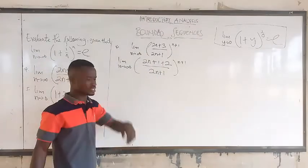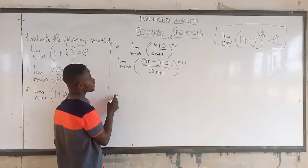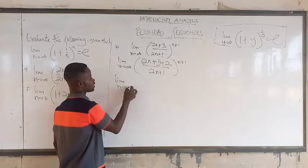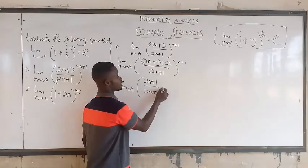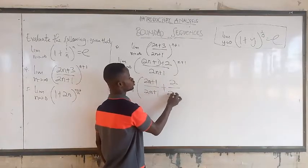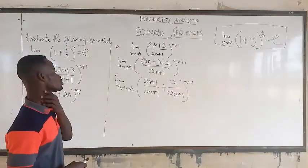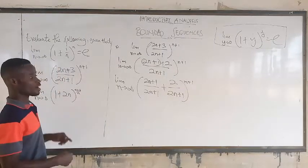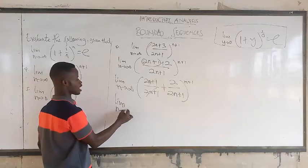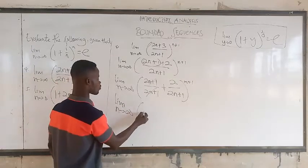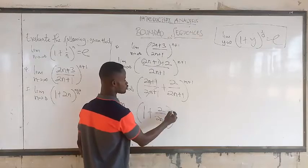In fact, we haven't changed the question. The inside is the same as this — we have just split 1 from the 3, and we now have 1 plus 2. Now, we can put this in bracket form. This is the same as (2n+1)/(2n+1) plus 2/(2n+1), all to the power n plus 1.